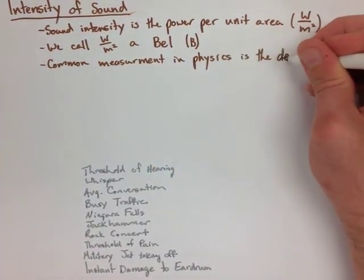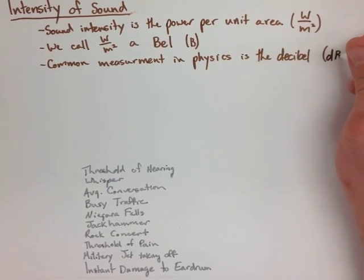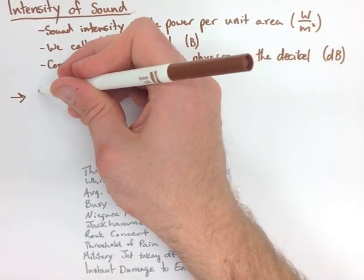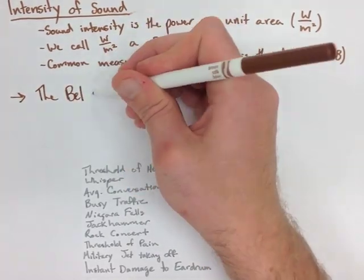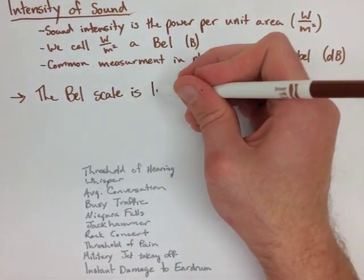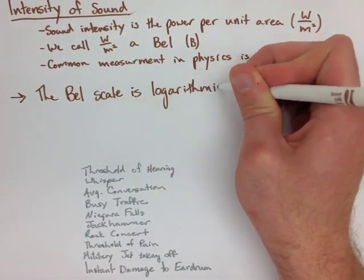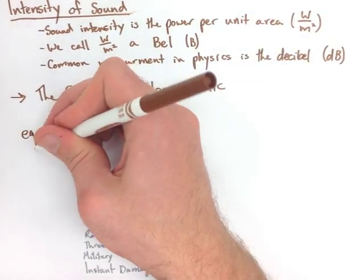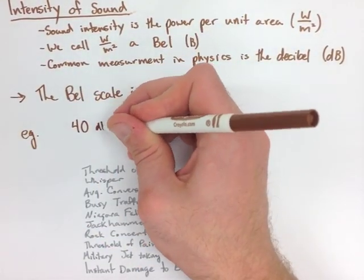Now the bell scale is a logarithmic scale. What this means is that it goes up 10 times every time we go up 1 bell. Now be careful because a lot of the times we'll be dealing in decibels, so it's a little bit confusing.